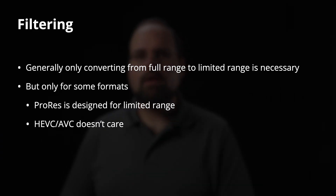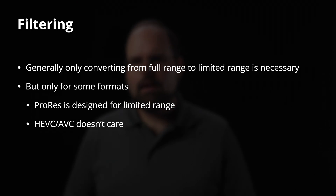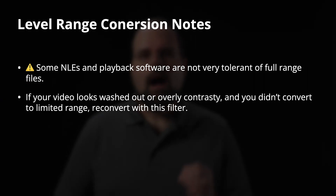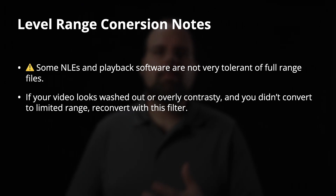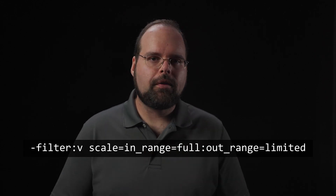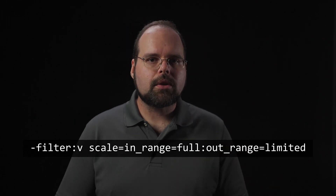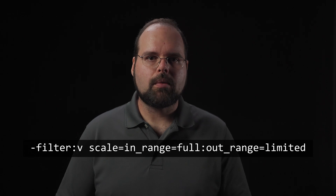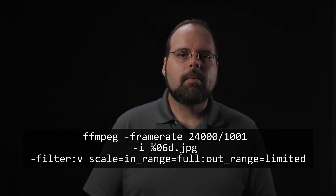The next section is filtering and processing. There's one filter you might need: rescaling values from full range — which is what image files are saved in — to video levels for certain codecs. Since we're going from a full-range image to a video format like ProRes, which only specifies limited range, we'll include that here. The command is filter colon V, scale equals in underscore range equals full colon out underscore range equals limited. That tells FFmpeg to scale the colors from full range to limited range.